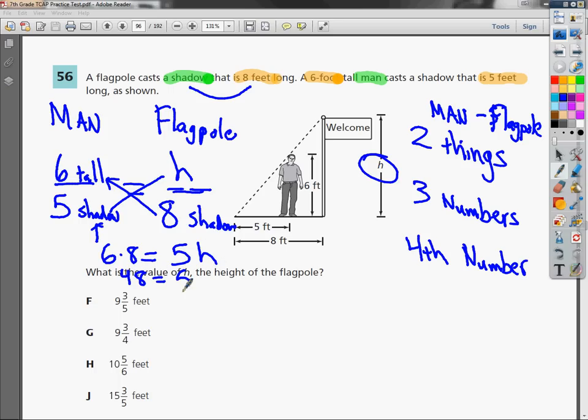And if you have your handy dandy calculator there, 48 divided by 5, you'll come out, if you just do a decimal answer, it's 9.6. Now I need to convert that into fraction form, so you may have to hit second fraction decimal or something, and you'll end up getting 9 and 3 fifths feet.